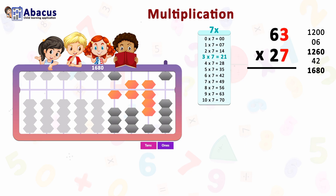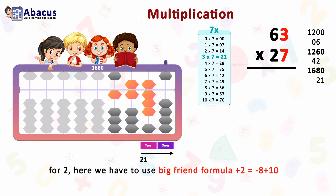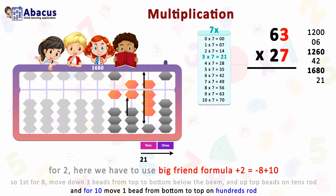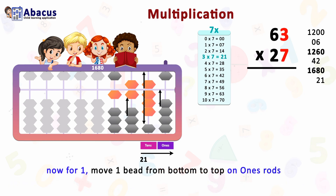Let's set 21 starting from the tens rod. On the tens rod, only one bead remains on the bottom, so we cannot directly add 2. We use the big friend formula: plus 2 equals minus 8 plus 10. Move three beads from top to bottom on the tens rod and move the top bead, then move one bead from bottom to top on the hundreds rod for the carry of 10. For 1, move one bead from bottom to top on the ones rod.